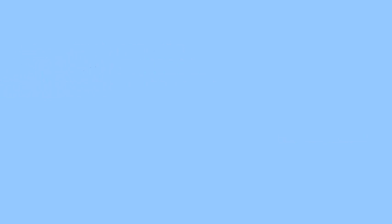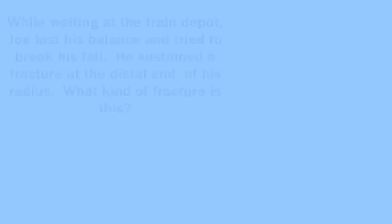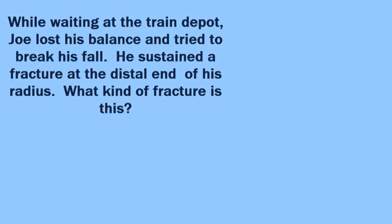The next question: While waiting at a train depot, Joe lost his balance and tried to break his fall. He sustained a fracture of the distal end of his radius. What kind of fracture is this? This is called a Colles fracture.